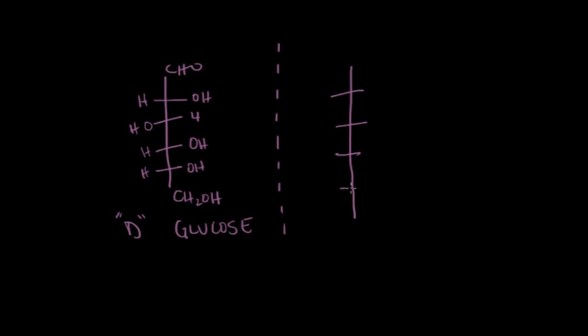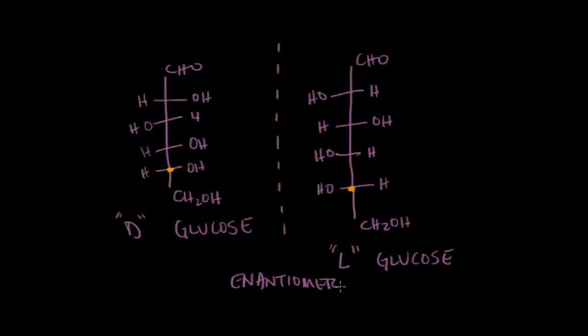So you can see, again, it has six carbons, so nothing's changing there. But as we reflect it across this mirror, every single chiral carbon is going to be the mirror image. So this is L-glucose. And again, the big thing that I want to clarify here is that it's not just this last chiral carbon that is flipped for the D and L. The D and L glucose are true enantiomers, which means that they're complete mirror images. They differ at every single chiral carbon.